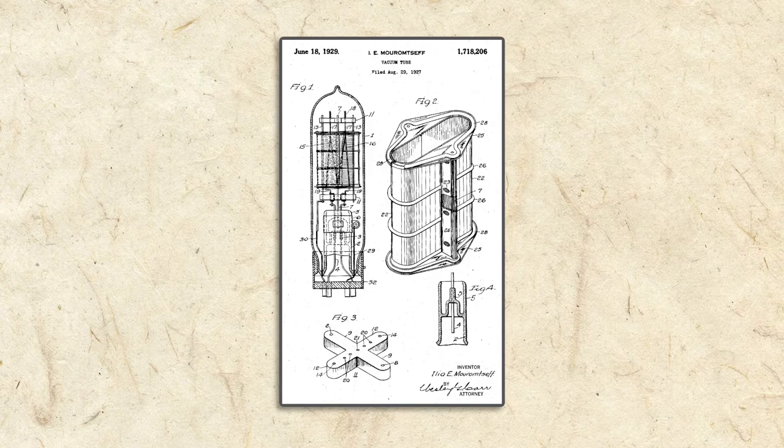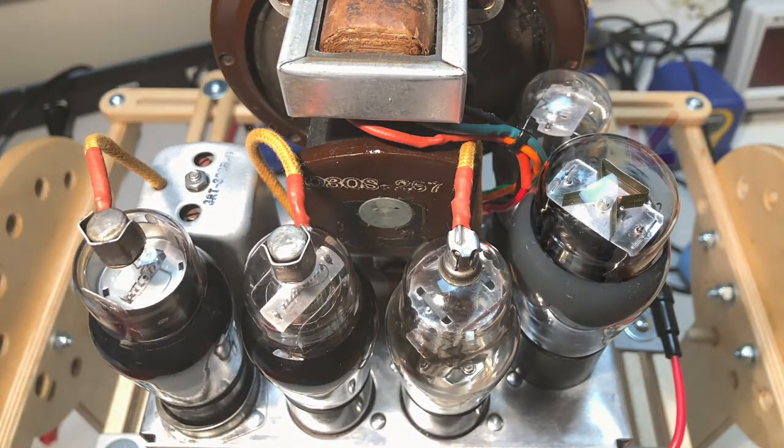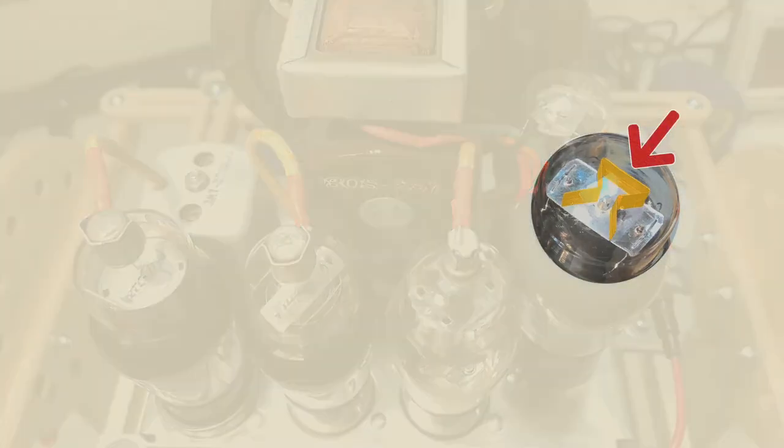It's sometimes difficult to see the internal structure of a tube without breaking it apart, but in this photo, you can see the very top of the beam forming plates.